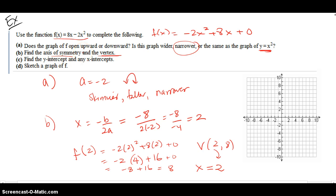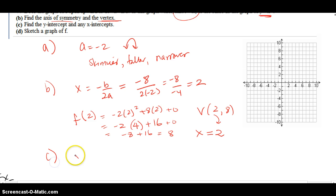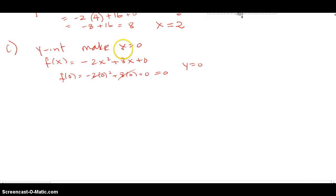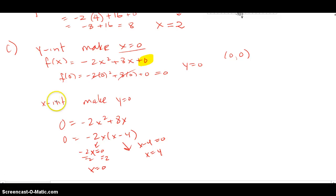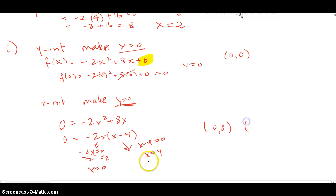Part C says find the y-intercept and any x-intercepts. For the y-intercept, we make x equal to 0 — plugging in gives y = 0, so the y-intercept is (0, 0). That last constant C is always the y-intercept because the x terms drop out. For the x-intercepts we set f(x) = 0, factor the GCF, set each factor equal to 0, and get two solutions. So the x-intercepts are (0, 0) and (4, 0).